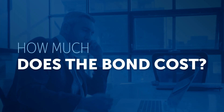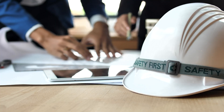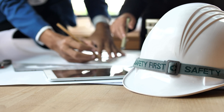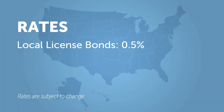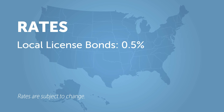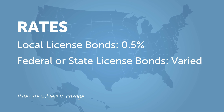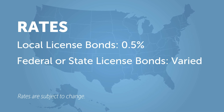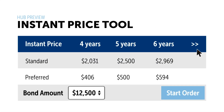How much does the bond cost? The rates for contractor license bonds vary depending on the bond form and statute language, the type of work being performed, and indemnitor qualifications. They can be as low as $5 per thousand, or 0.5 percent, for many compliance-only requirements for local licenses. Rates are much more varied for state-required license bonds. We do have preferred rates in many states. On Merchant's intuitive and efficient bonding website, the Hub, prices can be viewed instantly.